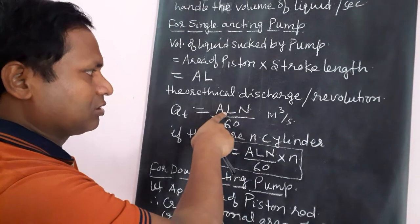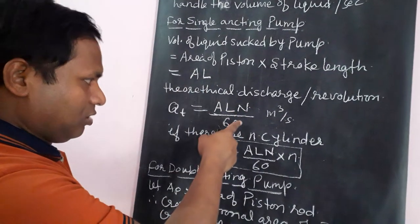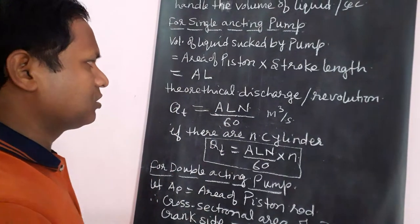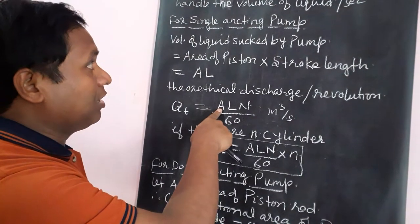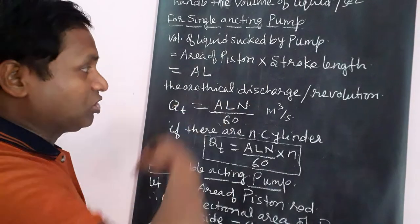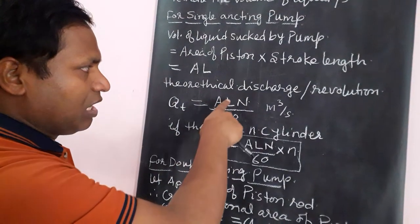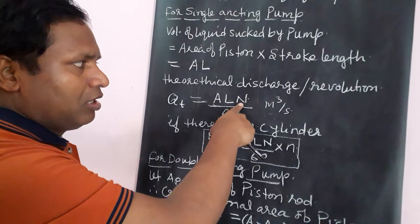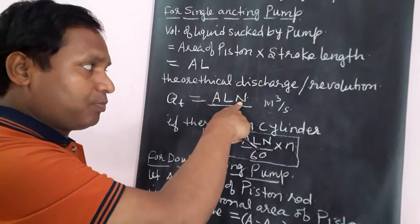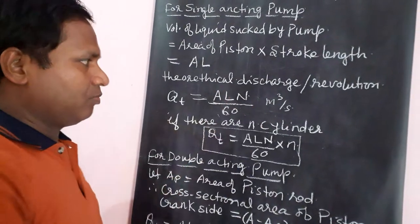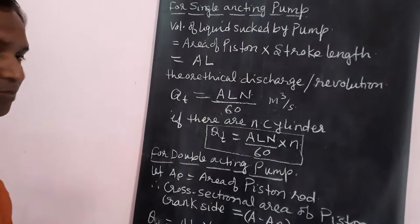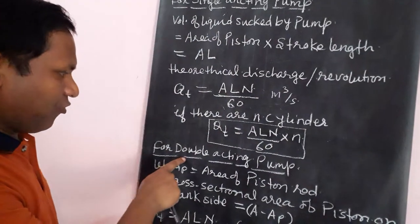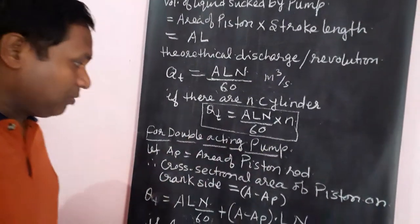Note the notation: A is the area of the piston, L is the length of the stroke, N is the RPM of the crank, and n is the number of cylinders.